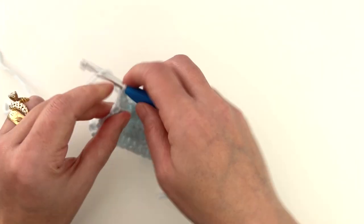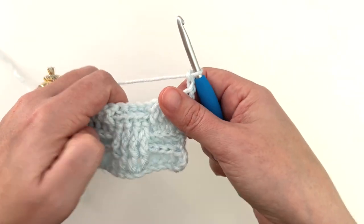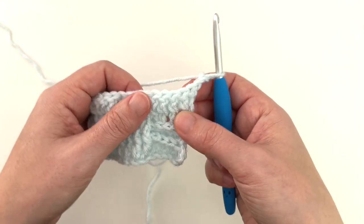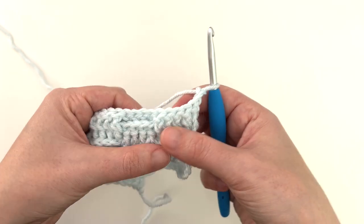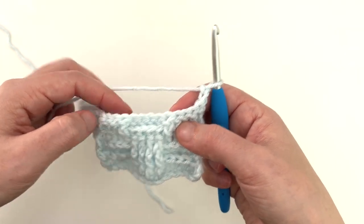For row five, chain two. Turn your work. And now we're going to go back to working what we see. So this appears to be a front post. So we work four front post, four back post, and so on.